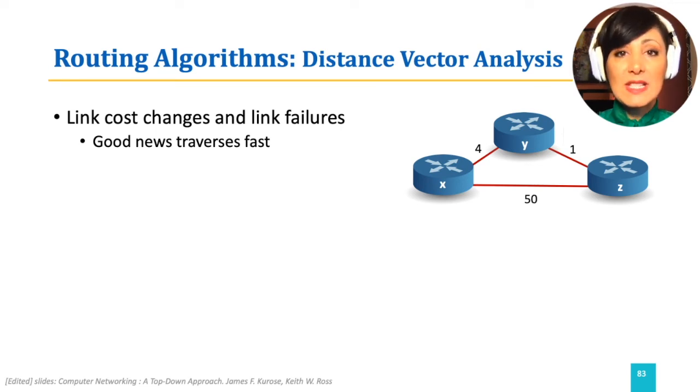And node Z reaches X and Y through Y, with costs 5 and 1. If the cost of the link between X and Y decreases to 1, X and Y will know about this, and in the next iteration Z will hear about it. And will update its cost to reach X using node Y, updating its calculation from 5 to 2, and sending its new calculation to its neighbors.